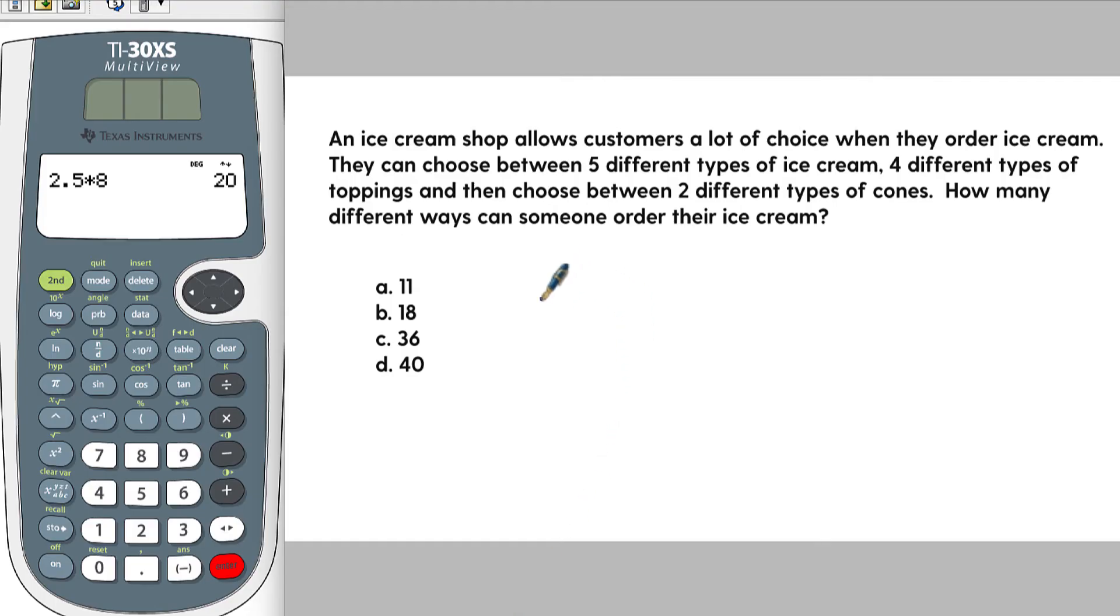So here's an example. An ice cream shop allows customers a lot of choice when ordering ice cream. They can choose between five different types of ice cream, four different types of toppings, and then choose between two different types of cones. How many different ways can someone order their ice cream?